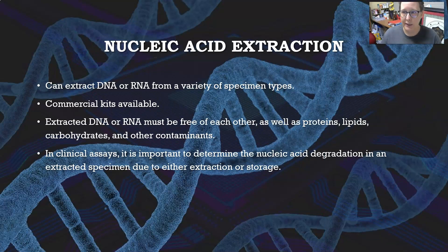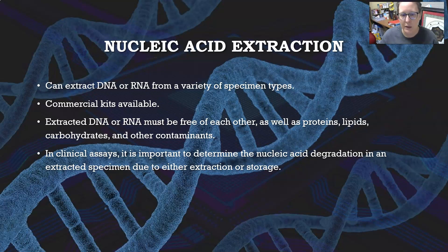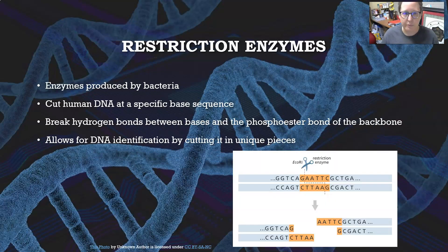How do we get nucleic acid for testing? You can extract DNA or RNA from a variety of specimen types — commercial kits are available. The extracted DNA or RNA has to be free of each other (no RNA in the DNA) and also free of proteins, lipids, carbohydrates, and any other contaminant that could interfere with testing. In clinical assays it is important to determine the nucleic acid degradation in an extracted specimen due to either extraction or storage, as it could affect the validity of the results.